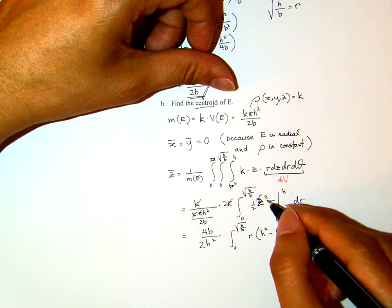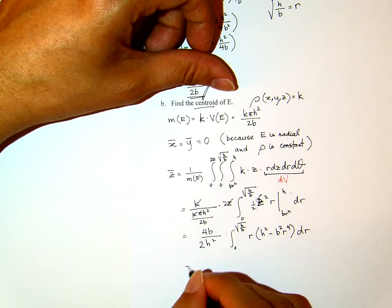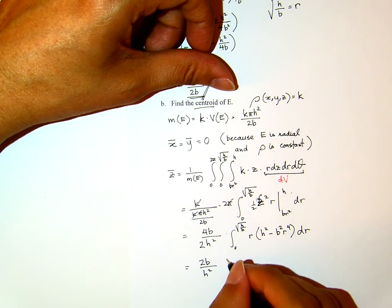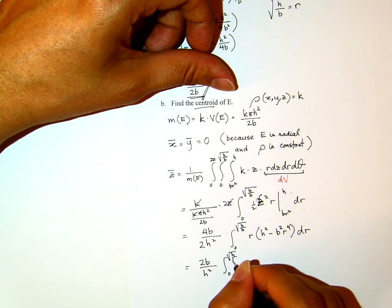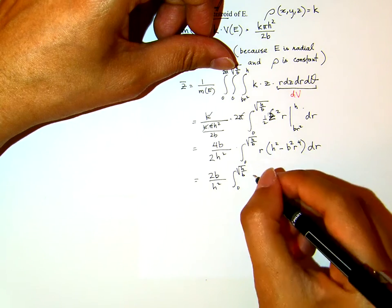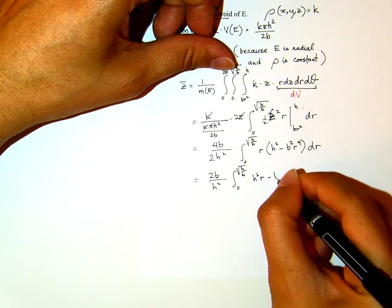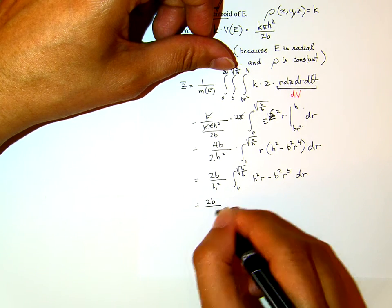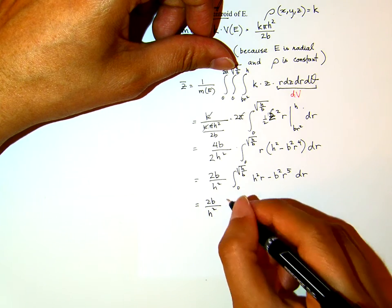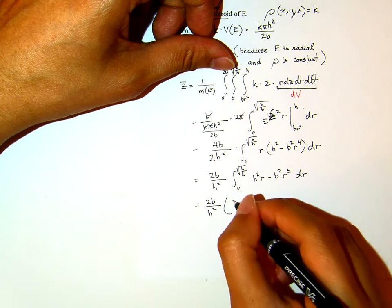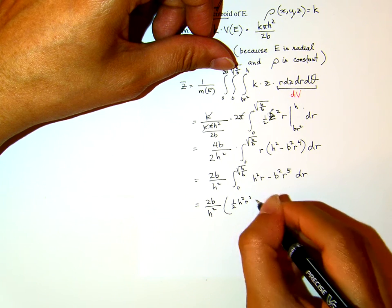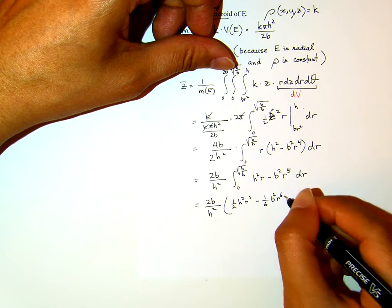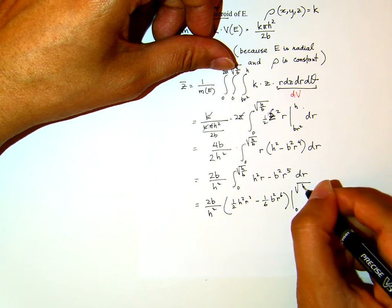Now, I'm not replacing the r, because the integral area with respect to z. This is equals to 2B over H squared, integral from 0 to square root of H over B, and then H squared r minus B squared r to the 5th dr. Now, from here, this is 1 half H squared r squared minus 1 6th B squared r to the 6th from 0 to square root of H over B.